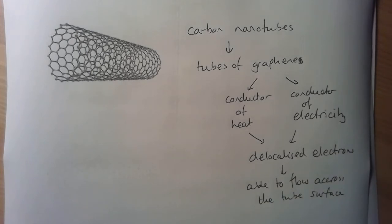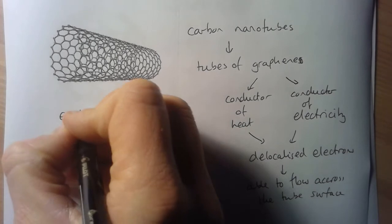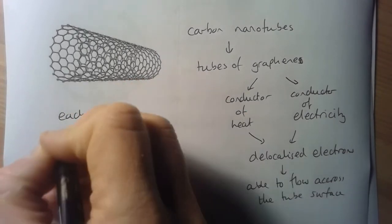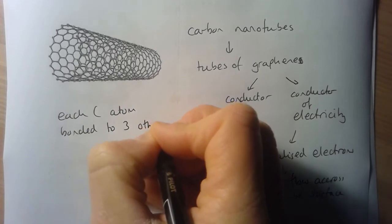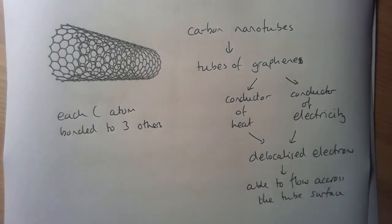We also need to know that each carbon atom is bonded to three others. So that's another key feature, similar to graphene, graphite, and fullerenes.